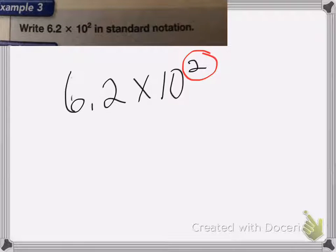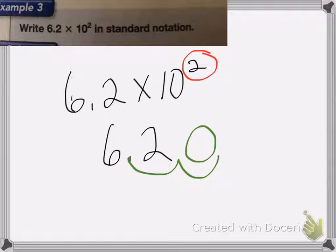So in this case, I have a two, so I need to move the decimal place two times. So I have 6.2. I'm going to move that decimal place two times one, two, and add my zero. So my answer is 620.